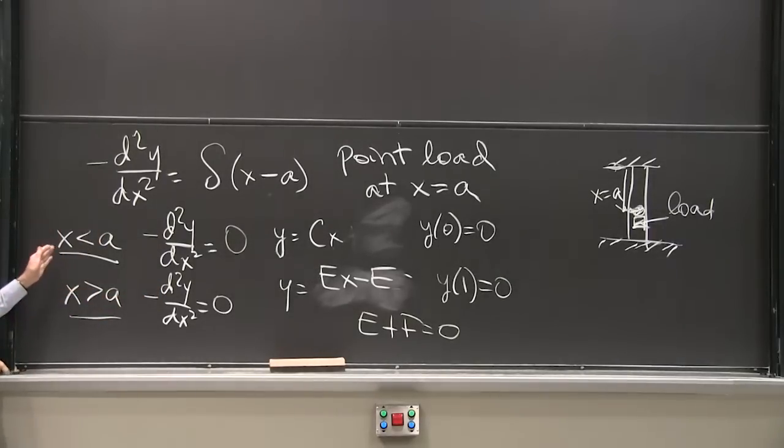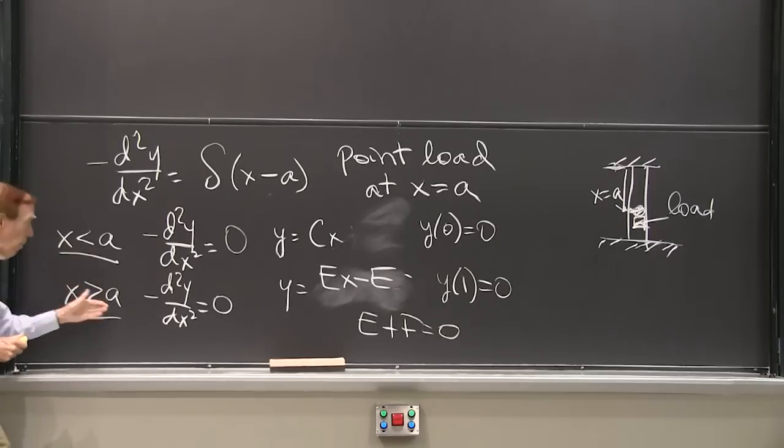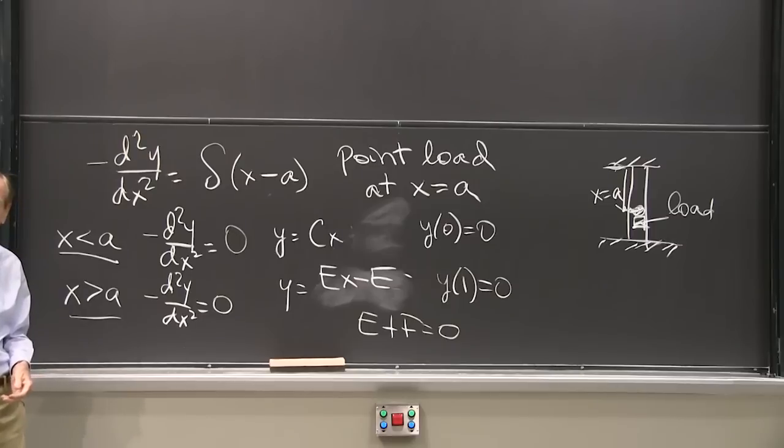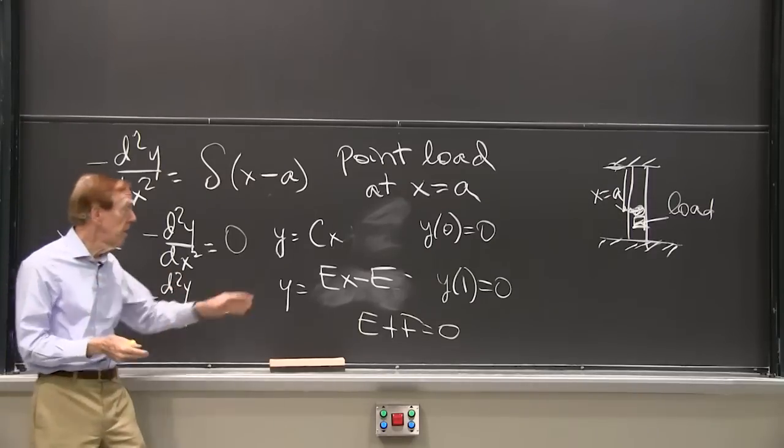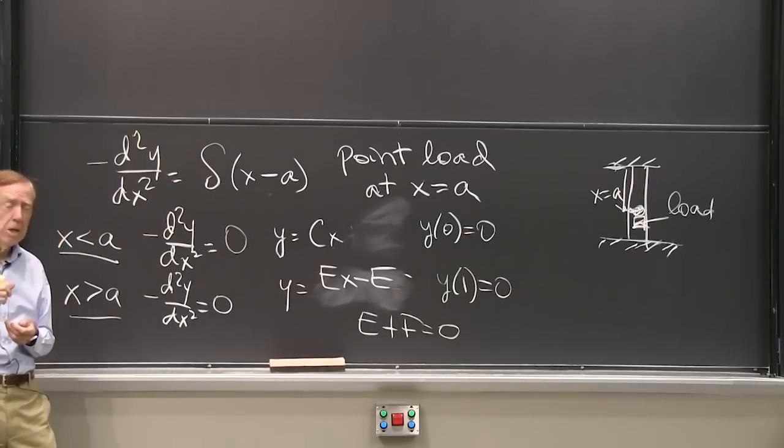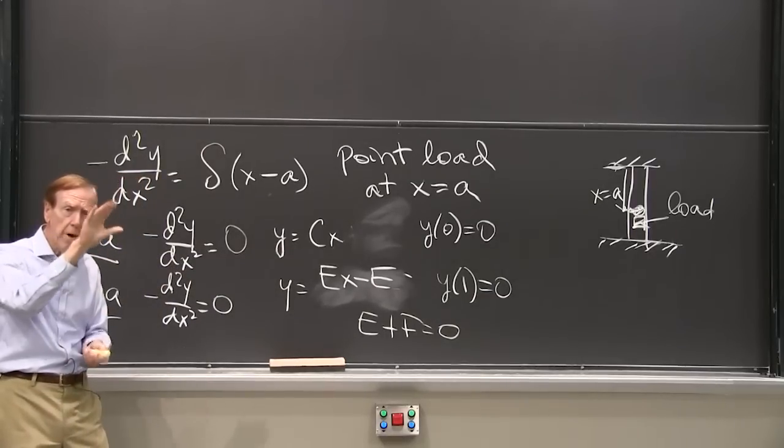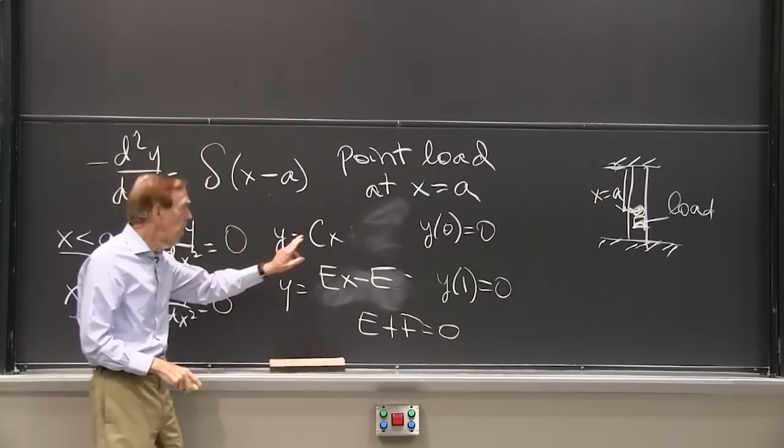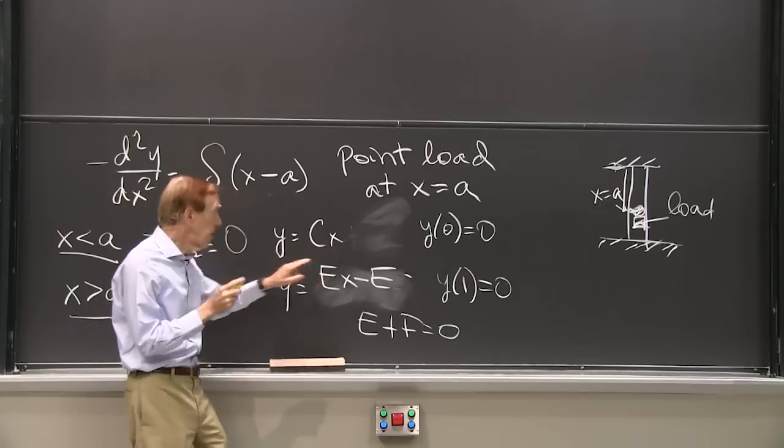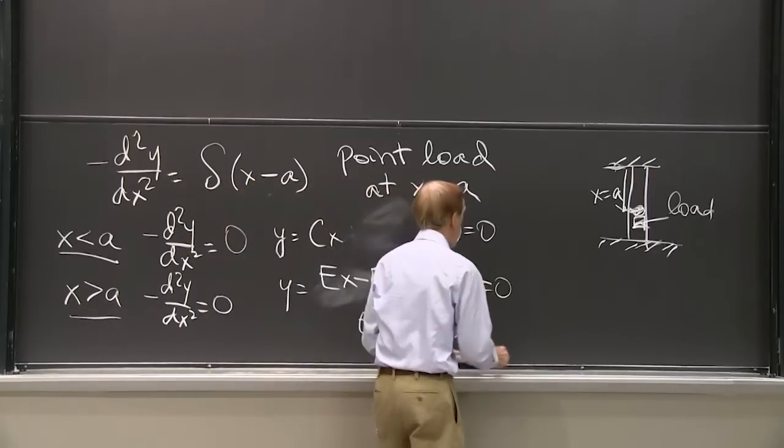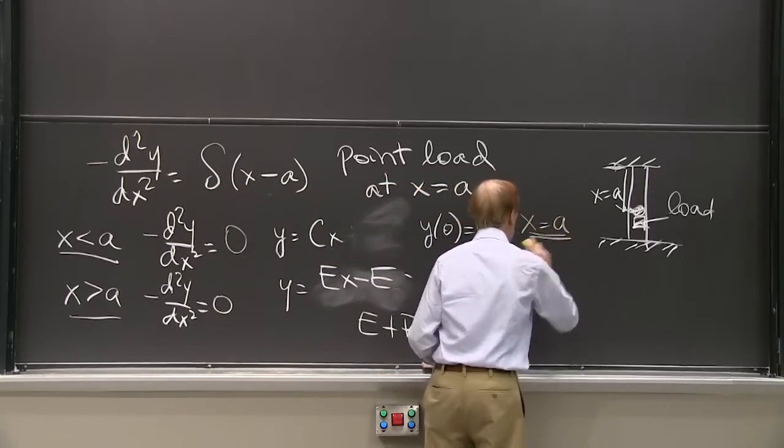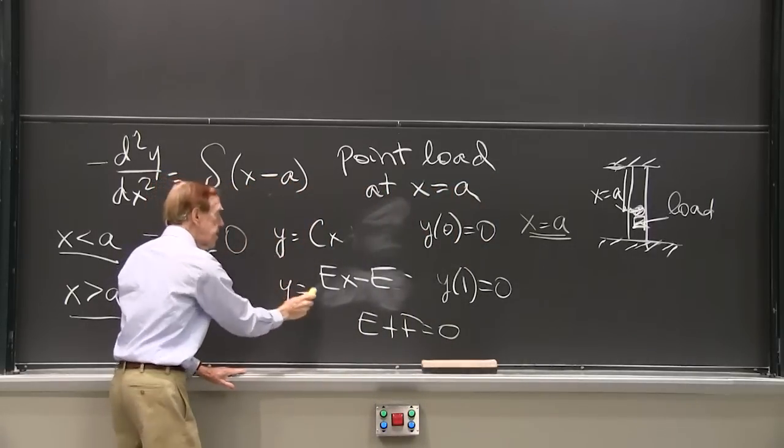But I still have two c and e to find. So what are my two further conditions at the jump? So far, I'm on the left of the jump, the spike, the impulse, the delta function, and on the right of it. But now I've got to say what's happening at the impulse, at the delta function, or at the point load. What's happening there? I need two equations. I've still got c and e to find. So my first equation is that at that load, the bar is not going to break apart. It's just going to be stretched above and compressed below. But it's not going to break apart. So at the load, which is x equal a, now I'm ready for x equal a. What happens at x equal a? That's the same as that.